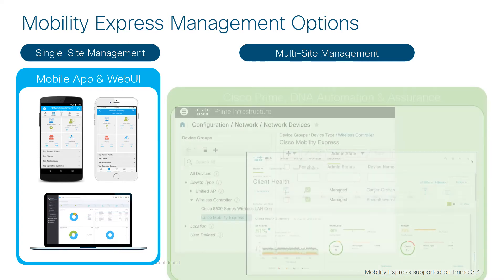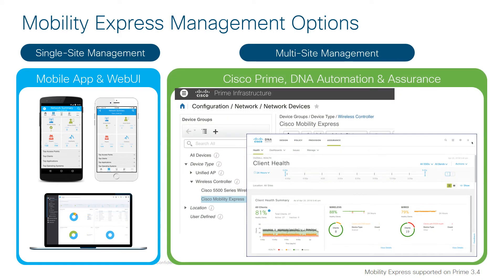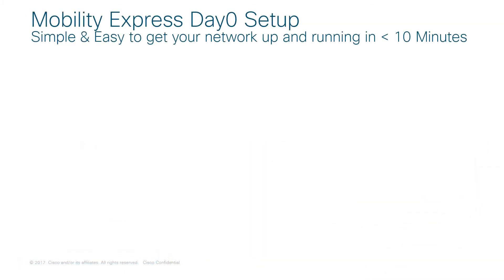For multi-site management or partner-managed options, you can use Prime 3.4 or Cisco's DNA Center. Mobility Express is fully supported on Cisco DNA Center Automation and Assurance. You may have heard that Cisco products are very complex to use, but in this lesson we will dispel this myth about Aeronet products.